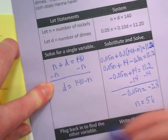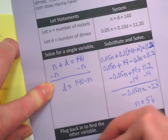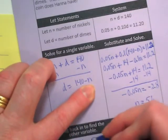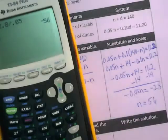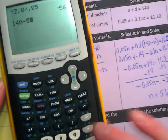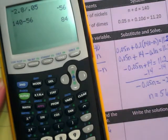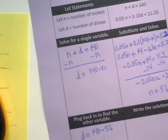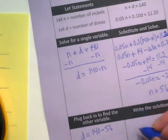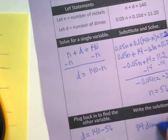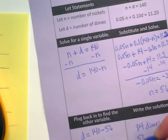I need to know how many dimes. So D is equal to 140 minus N, and we now know N is? 140 minus 56, 84. So I get 84 dimes and 56 nickels.